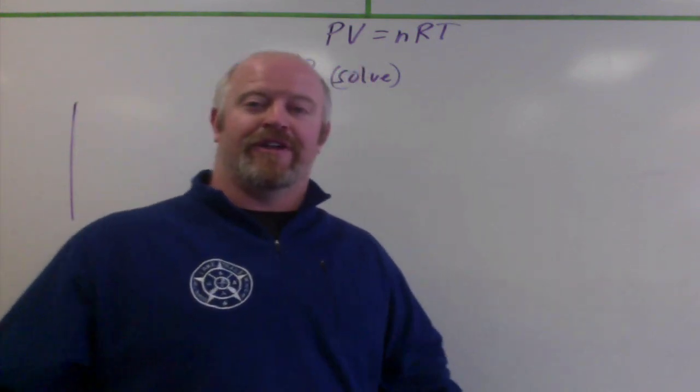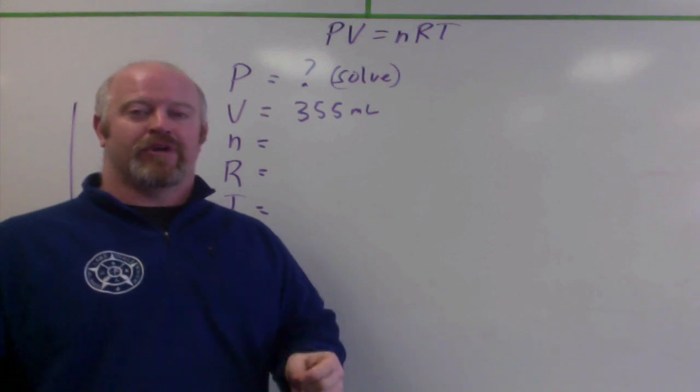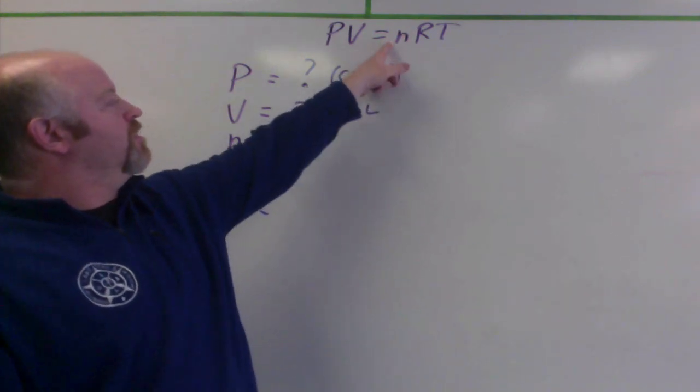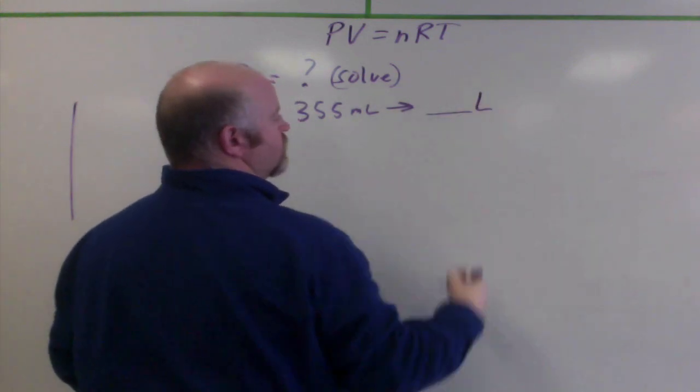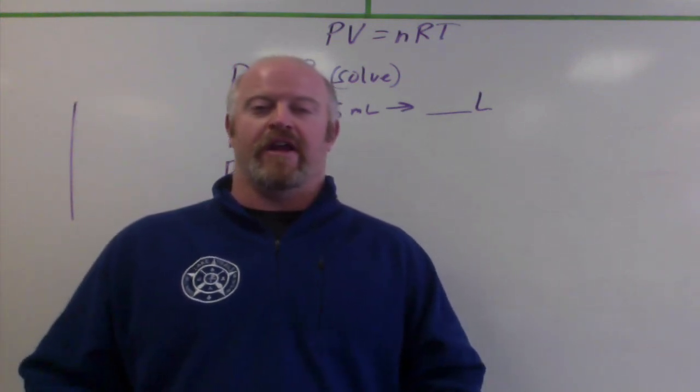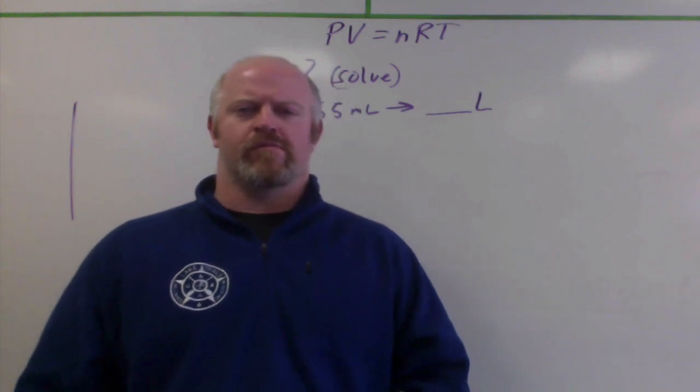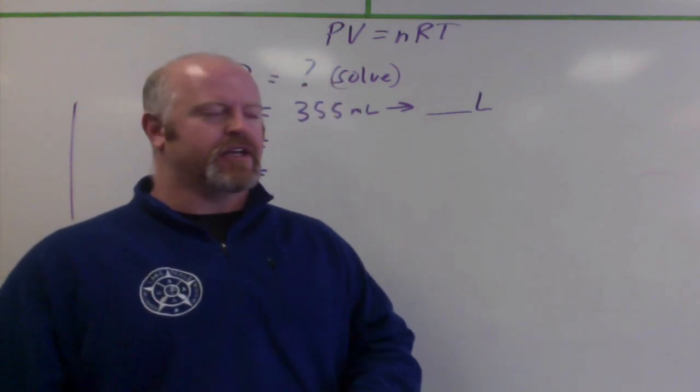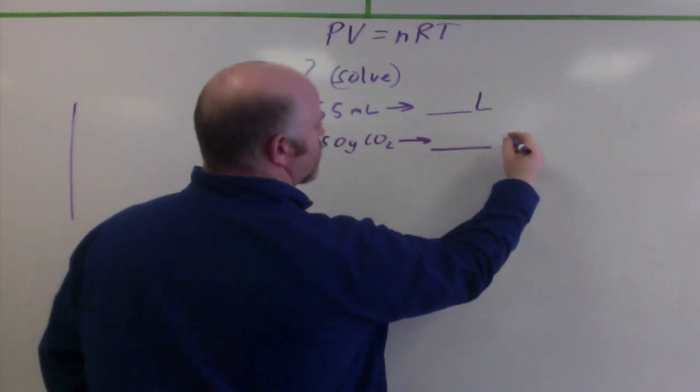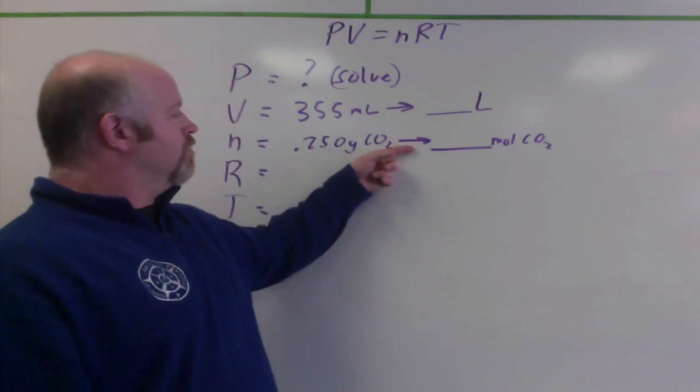Second thing is volume. So if we take a look, we have a 355 milliliter container. Now, we've got a good volume. Problem, that's in milliliters. We can't work in milliliters with the ideal gas law. We have to work in liters. So before you put it into Pivner, you have to convert this to liters. Next thing, N. So now we're going to use number of moles for N. And we have 0.25 grams of carbon dioxide. There's no moles in the problem. Wait a minute. We have grams and we have carbon dioxide. So if I know I have 0.250 grams of CO2, I should be able to convert to moles of CO2. Doing a little dimensional analysis here, a really short one. So we're going to do that conversion.